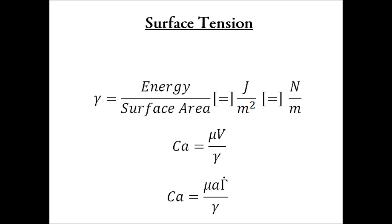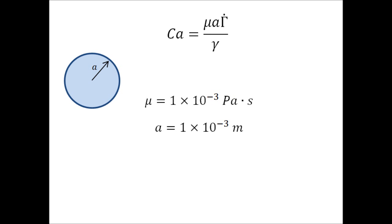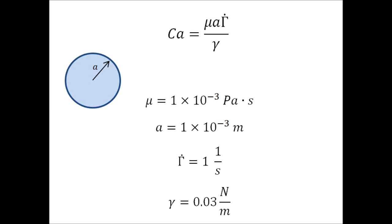Looking at one particular example, we see here we have an oil droplet, and we take the viscosity of water at 20 degrees Celsius as 1 times 10 to the negative 3 pascal seconds. We have a drop radius of 1 millimeter, a shear rate of 1 inverse second, and an average surface tension between the oil and water of about 0.03 newtons per meter. We'll see what the resulting capillary number is.